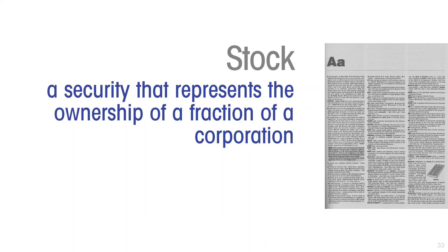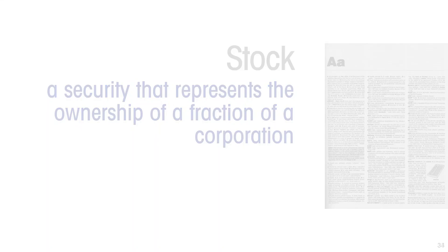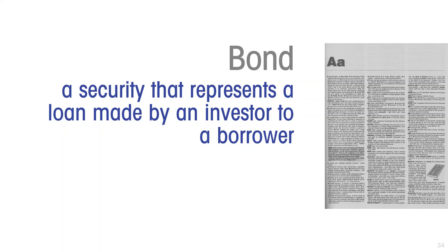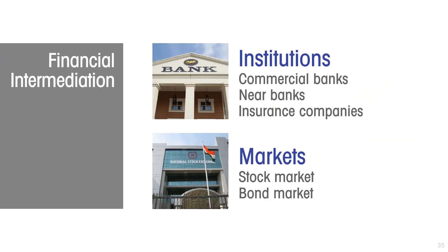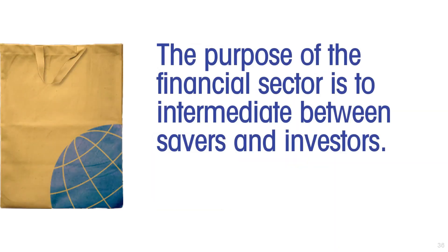So, stock is a security that represents the ownership of a fraction of a corporation. A bond is a security that represents a loan made by a saver to a borrower. The financial sector — made up of institutions and financial markets — exists to intermediate between savers and investors.